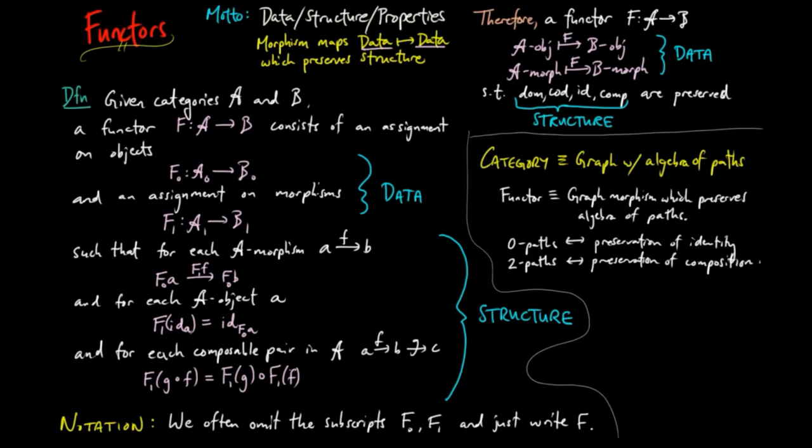We can also display the definition of a functor as a commutative meta-diagram. We define A sub 2 as a collection of all composable pairs of morphisms in A, given here in pullback notation,